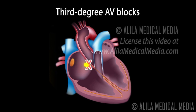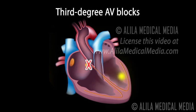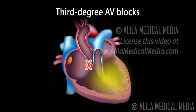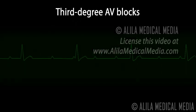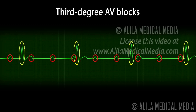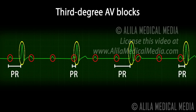Third degree AV blocks are also referred to as complete heart blocks. In this condition, none of the electrical signals from the atria reach the ventricles. With no input coming from the atria, the ventricles usually try to generate some impulses on their own — this is known as an escape rhythm. On an ECG, two independent rhythms can be seen: a regular P wave pattern representing atrial rhythm, and a regular but unusually slow QRS pattern representing the escape rhythm. The PR interval is variable as there is no relationship between the two rhythms.